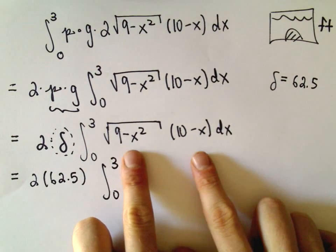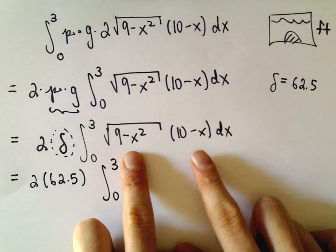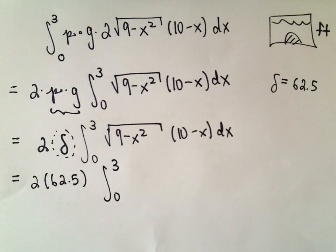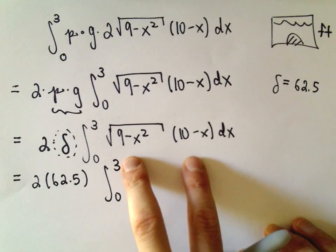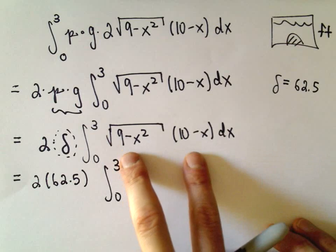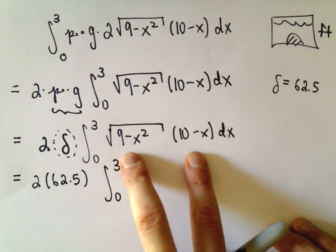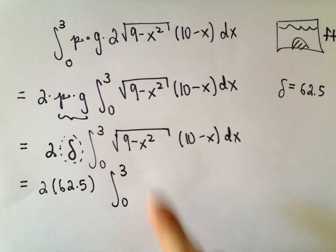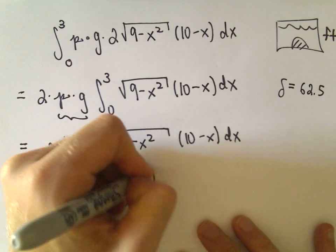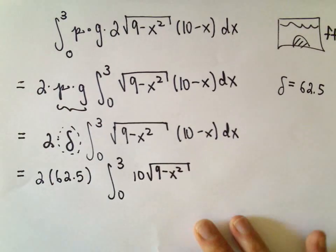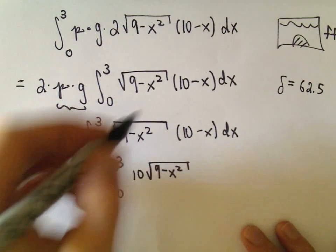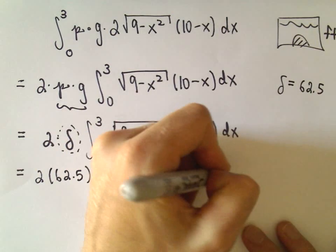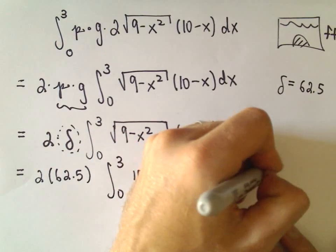Now the question is: how do we integrate the square root of 9 minus x squared times (10 minus x)? This isn't something I could do right off the bat — I don't just look at that and know an antiderivative. What I'm going to do is distribute the square root, giving us 10 times the square root of 9 minus x squared, and then negative x times the square root of 9 minus x squared.